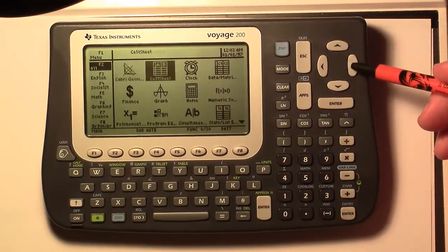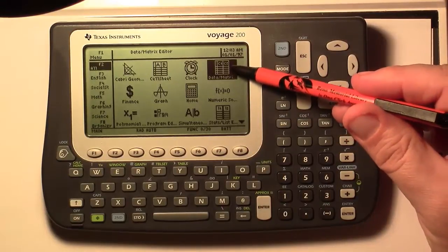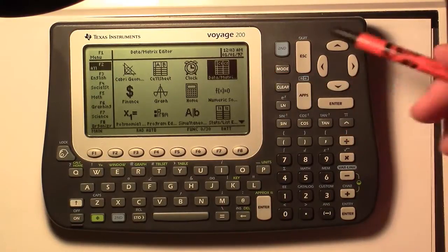Now we want to use our arrow keys and we want to highlight the data slash matrix choice. And then we'll press our enter.